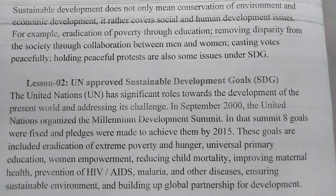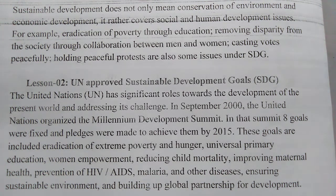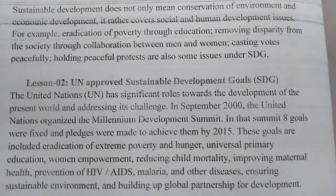The eight MDG goals were: first, eradication of extreme poverty and hunger; second, universal primary education for all; third, women empowerment — empowering women through education and raising their status in family, society, and state; fourth, to reduce child mortality rate; fifth, to improve maternal health; sixth, to prevent HIV/AIDS, malaria, and other deadly diseases; seventh, to ensure sustainable environment; and eighth, to build up global partnership for development.